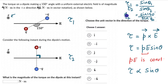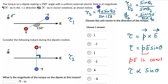Solving for τ₂, the torque at this instant is 4 × sin90° / sin150°. Since sin90° = 1 and sin150° = 0.5, we get 4 / 0.5 = 8 Newton meters. So the torque at this instant is 8 Newton meters.